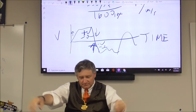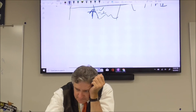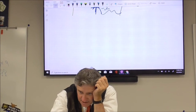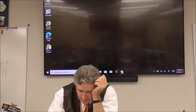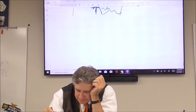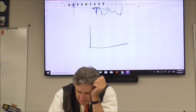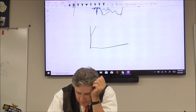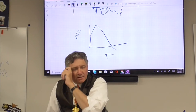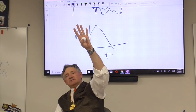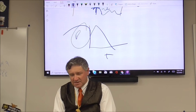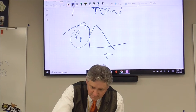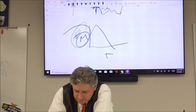A student asks about number six regarding a position-time graph. Let's start with the units. Position is going to be measured in meters; time in seconds. Let's say this thing was actually a rectangle — if I multiplied five meters by ten seconds, what would I get? 50. But what units would I have? Meter-seconds.